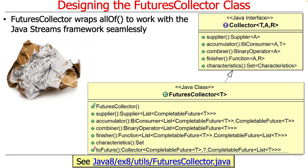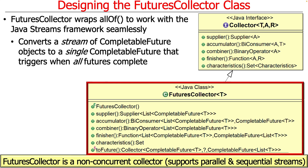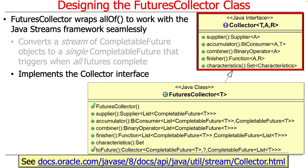So let's talk about how we're going to design this class. FuturesCollector is going to wrap allOf and we're going to make it work with the Java streams framework as a terminal operation, which is the way that collectors work. We've got this class called FuturesCollector, which we implement by filling in all of the different methods. Most of these methods come from implementing the Collector interface - a Java interface that has various features for creating suppliers, accumulators, combiners, finishers, and noting the characteristics metadata. That's what FuturesCollector is going to implement.